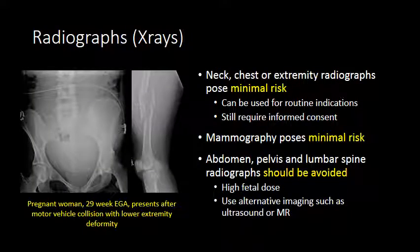Radiographs, more commonly known as x-rays, do require ionizing radiation. When an x-ray is obtained outside of the abdomen or pelvis, there's minimal fetal dose and x-rays can be used for routine clinical indications — such as a chest x-ray for suspected pneumonia or a radiograph of an extremity for a suspected fracture. Mammography poses minimal risk to the fetus and can be obtained without concern for fetal dose. Abdomen, pelvis, and lumbar spine radiographs should be avoided, as they cause direct ionizing radiation to the developing fetus, and alternative modalities such as ultrasound or MRI will usually better answer your clinical question.